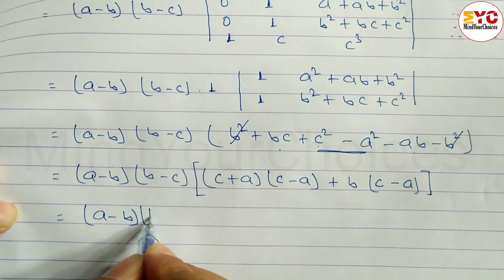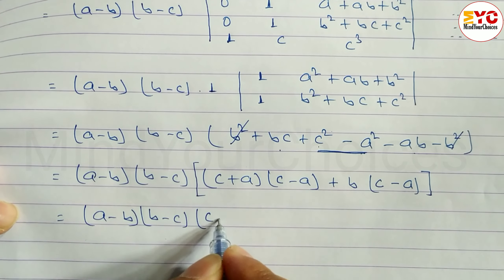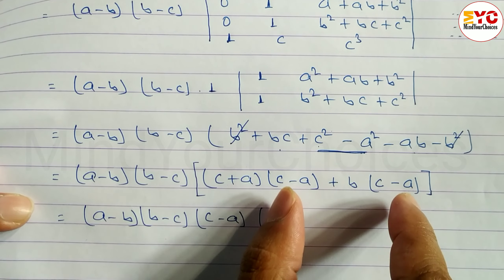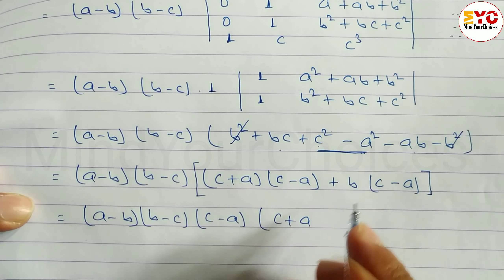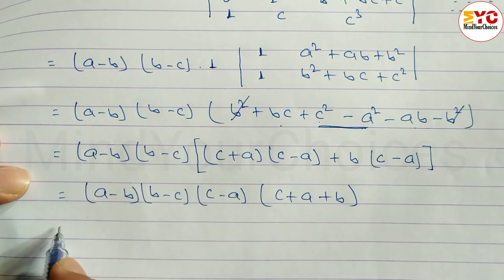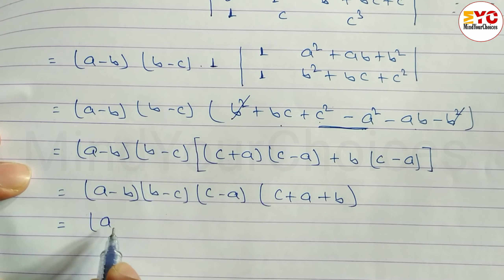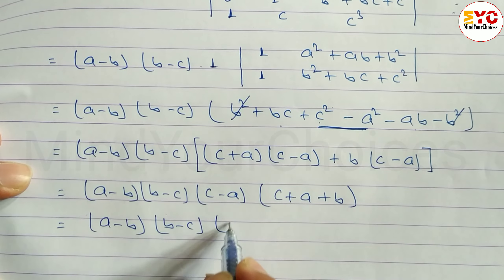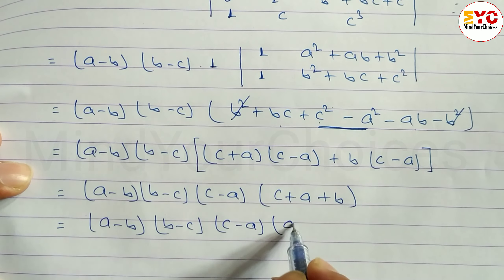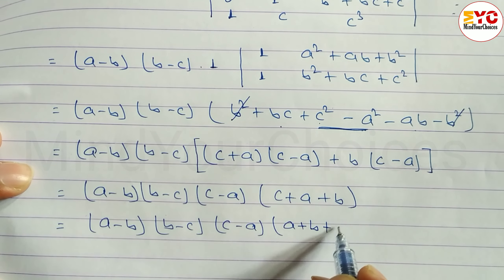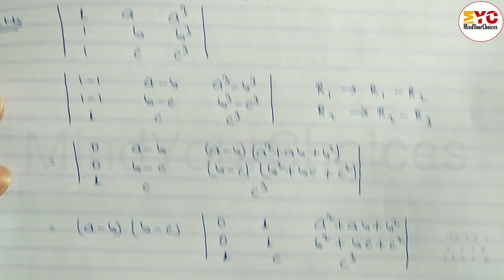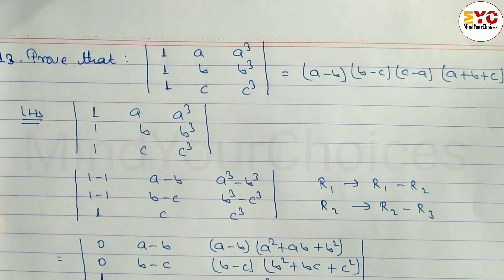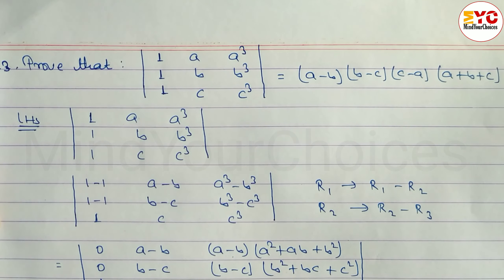So we can write (a-b)(b-c)(c-a) common, with remaining (c+a+b), which gives us (a-b)(b-c)(c-a)(a+b+c), which equals RHS. Proved. Hope you understand this question, taken from Class 12 Business Mathematics. Please like, subscribe, and share with your friends. Thanks for watching till the end.